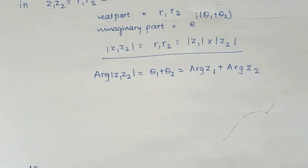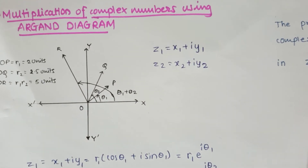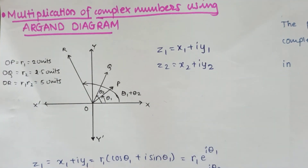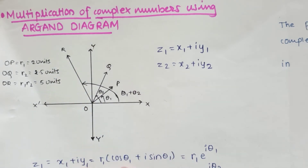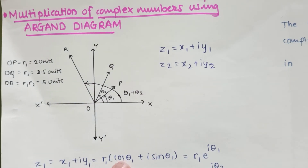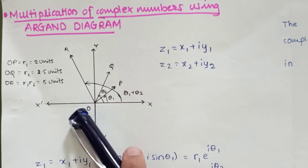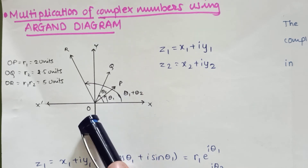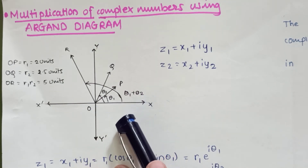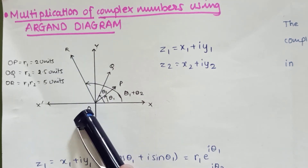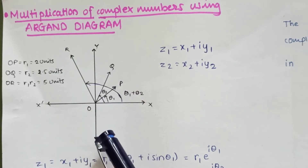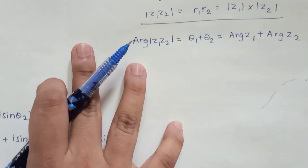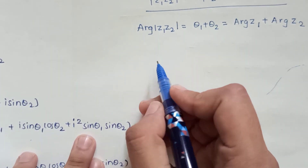Now, from the figure, OR represents the multiplication of two complex numbers Z1 and Z2. OR makes an angle (θ1 + θ2) with the real axis. In the figure, OR = OP × OQ, that is OR = R1 × R2, where OP = R1 and OQ = R2.